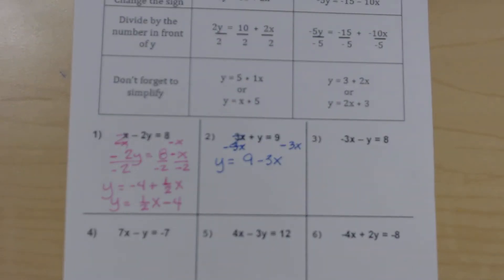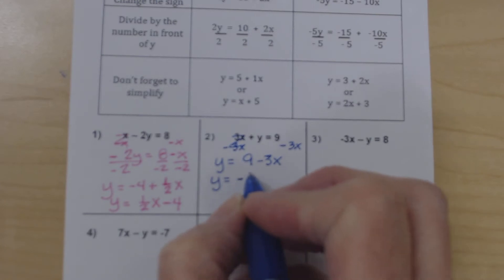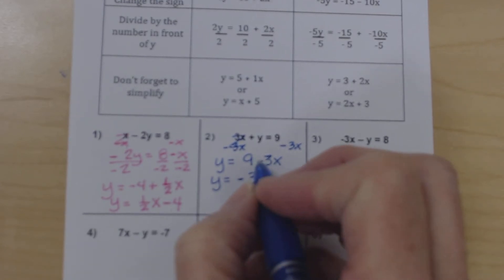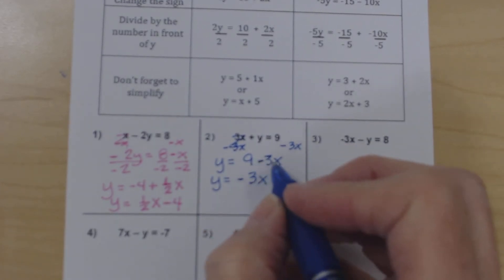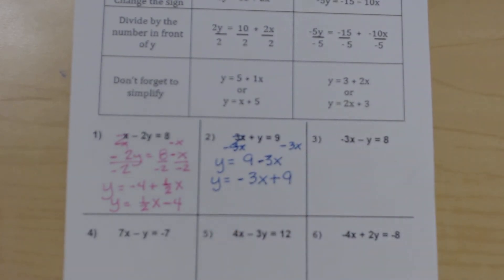But we want to put this into slope-intercept form. So that means that the x term comes first. And remember, every number has a sign and every sign has a number. So in front of the 9 is that invisible plus sign. So there we have our second example in slope-intercept form of y equals negative 3x plus 9.